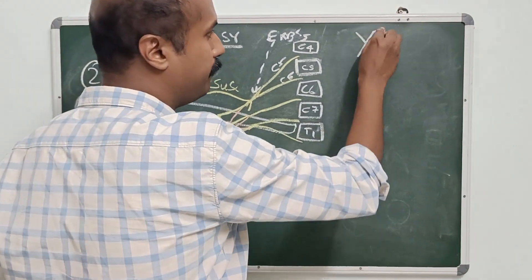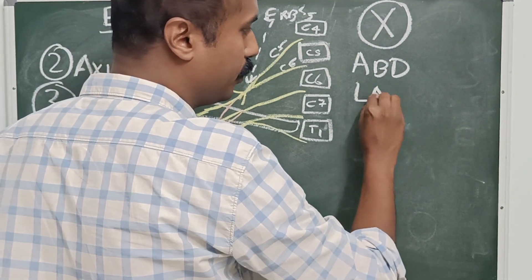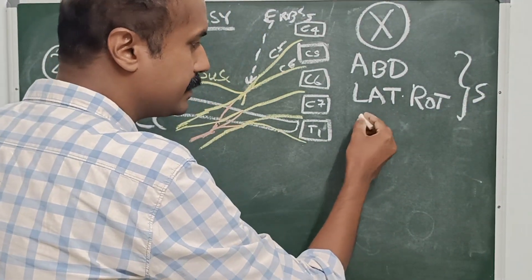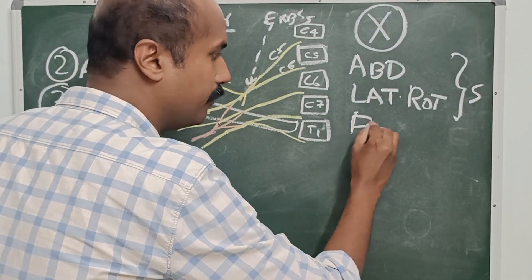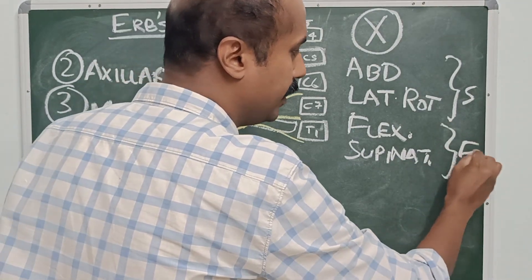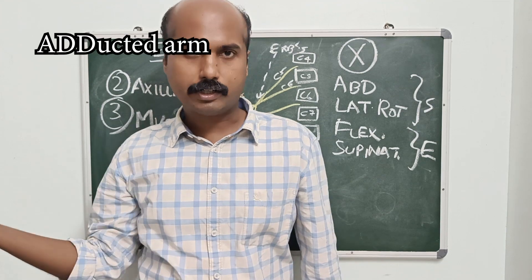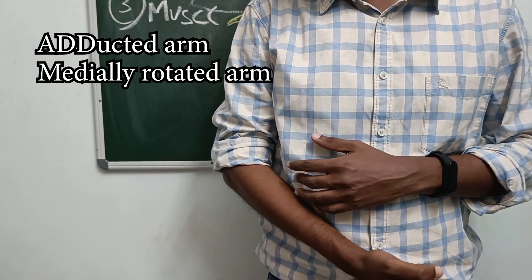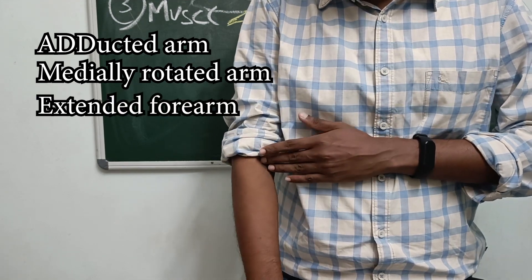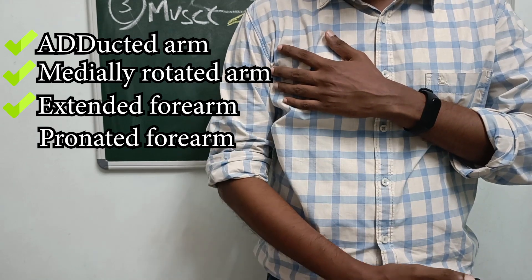Looking at the muscles affected: abduction of the shoulder and lateral rotation of the shoulder are both affected. Next, flexion of the elbow as well as supination of the forearm are also affected. So what will be the attitude? Abduction of the shoulder is affected, so the shoulder will be lying by the side of the trunk. Lateral rotation is affected, so the arm will be going into medial rotation. At the elbow, flexion is affected, so the elbow will be extended. Supination is affected, so the forearm will be slightly pronated. The attitude is therefore the arm lying by the side, medially rotated, elbow extended, and slightly pronated.